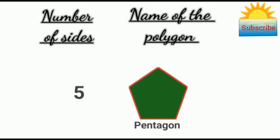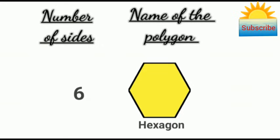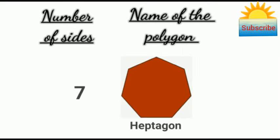A polygon of five sides is called a pentagon. A polygon of six sides is called a hexagon. A polygon of seven sides is called a heptagon.